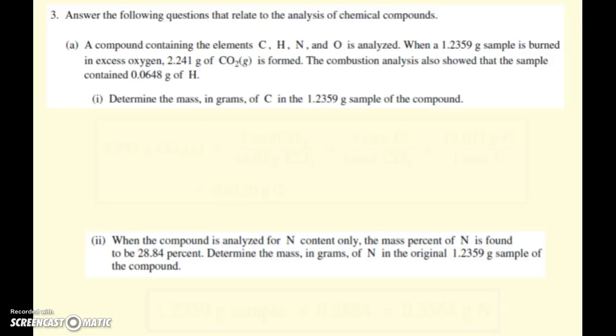Alright, so this question is from 2006, question number three, and we're analyzing chemical compounds. Here we have a nice one of those carbon, hydrogen, nitrogen, oxygen compounds. A lot of times you just see it with carbon, hydrogen, and oxygen, but if they throw nitrogen in too, no big deal. We're burning this in oxygen, and when this compound burns, we get carbon dioxide formed, and the combustion analysis told us how much hydrogen was in it. So we've got some good data up there in the first sentence. The first question says, determine the mass in grams of carbon in the 1.2359 gram sample of the compound.